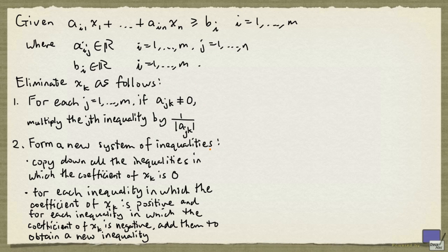And then we form a new system of inequalities. This system will not contain the variable xk. First, we copy down all the inequalities in which the coefficient of xk is 0. In other words, inequalities in which xk does not appear.